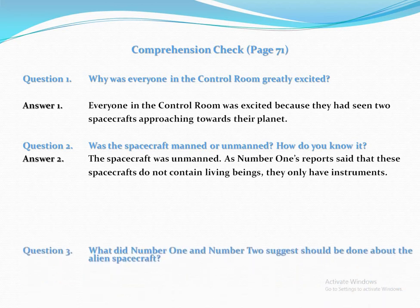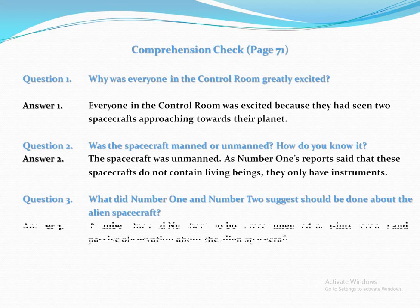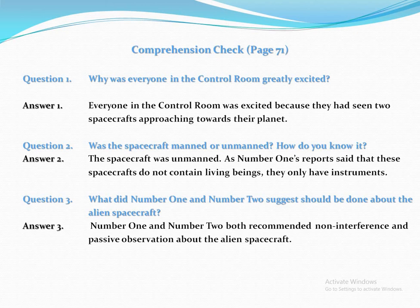The last question of this comprehension check is: What did number 1 and number 2 suggest should be done about the alien spacecraft? The answer is: Number 1 and number 2 both recommended non-interference and passive observation about the alien spacecraft.